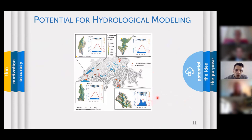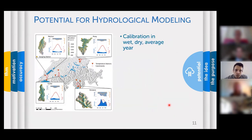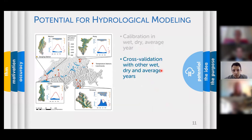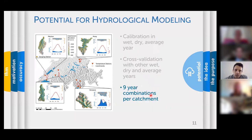In this study I chose four catchments in Switzerland and calibrated each with one wet year, one dry year, and one average year, then cross-validated these calibrations with another wet, dry, and average year — giving nine year-combinations per catchment in total.